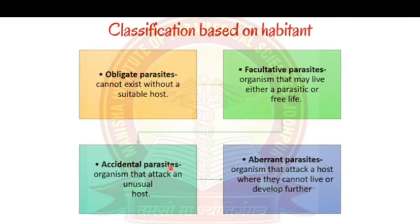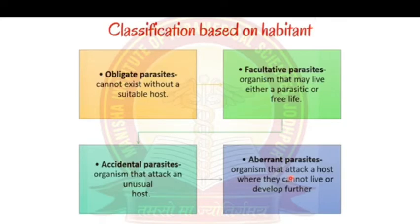Accidental parasites enter the human body by accident — for example, Echinococcus granulosus, a dog tapeworm, infects children who have close contact with dogs. Aberrant parasites can enter a host but cannot survive or develop further from larval to adult stage in that host.